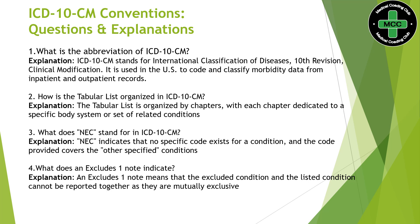The second question: how is the tabular list organized in ICD-10 CM? The tabular list is organized by chapter based on the body system. In the alphabetic index, medical conditions are listed in alphabetical order. That is the difference between the tabular list and the alphabetic index.